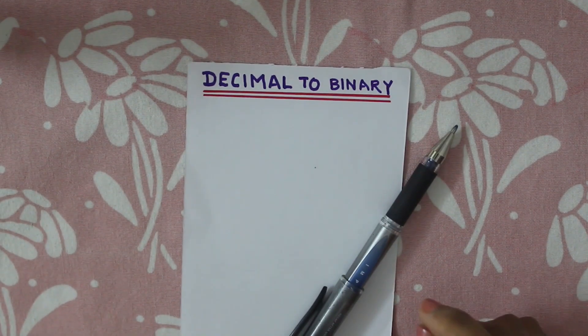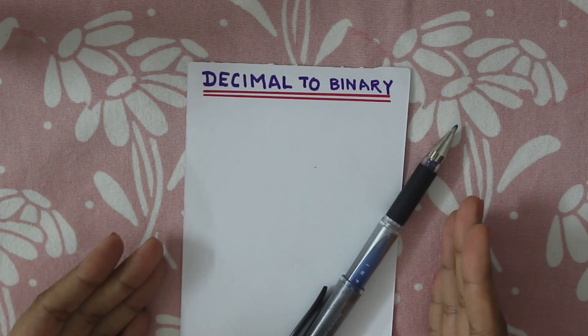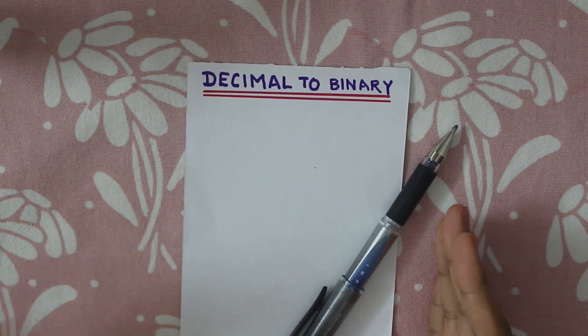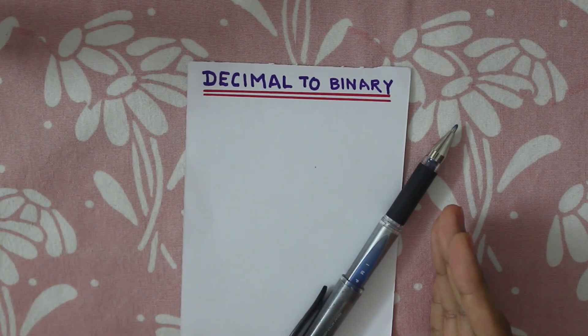We will denote hexadecimal with the prefix 0x. Now we will look at conversions. Let's look at decimal to binary conversion first, because as you'll see, all conversions follow the same format.